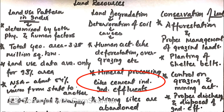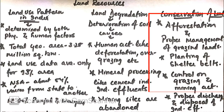Next topic is conservation of land resources. For this, afforestation should be encouraged, proper management of grazing lands, we should plant shelterbelts, control grazing and mining activities, plus proper discharge and disposal of industrial effluents.